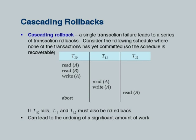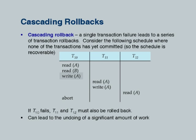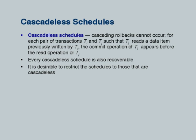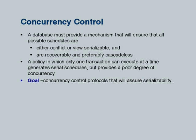A recoverable schedule can still cause cascading rollback. If T1 wrote A and another transaction read it, then T1 aborts, that other transaction must also be aborted. If you do not allow any uncommitted data to be read, this prevents cascading rollback. A cascadeless schedule is basically equivalent to read committed — it allows only items to be read after they have been committed.